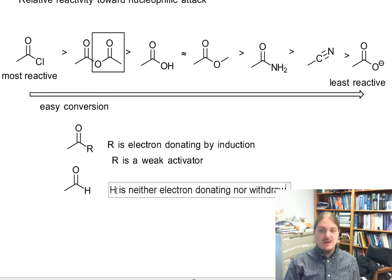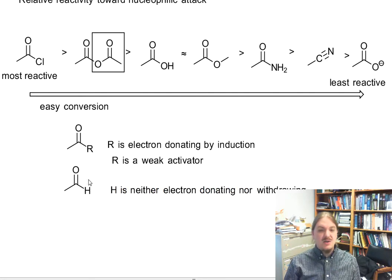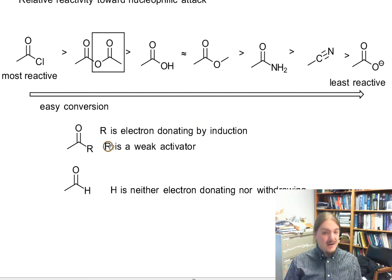Hydrogen is neither electron donating nor withdrawing. All of the electron density that hydrogen has is already tied up in the carbon-hydrogen bond. So if you're looking for a zero point between electron donating and electron withdrawing, hydrogen is that zero point. But alkyl groups are weakly electron donating by induction, so weak activator in electrophilic aromatic substitutions.